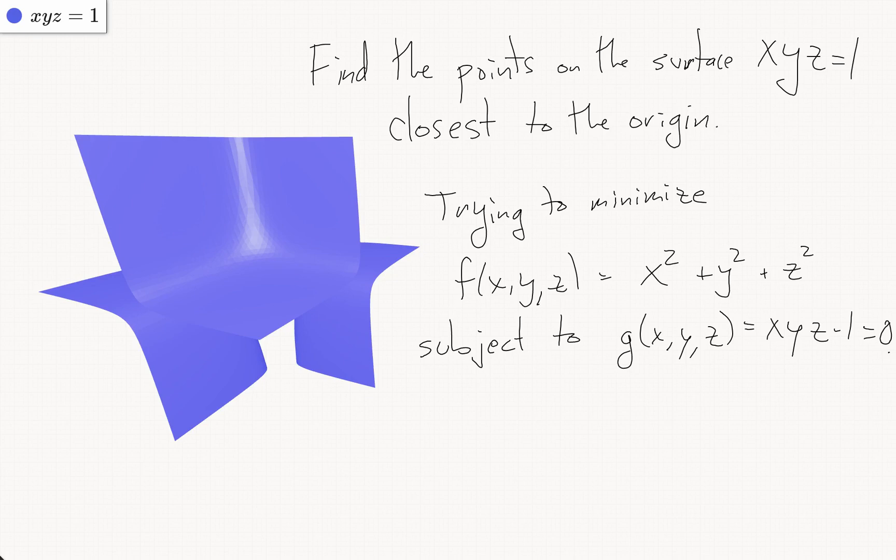Really we're trying to minimize the square root of this because that would be the actual distance to the origin, but minimizing the square root of this is the same as minimizing this function, and this will make the algebra a little easier.